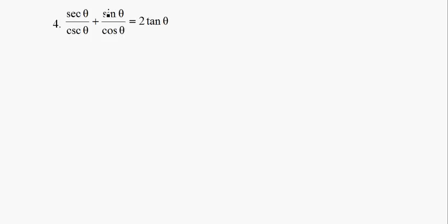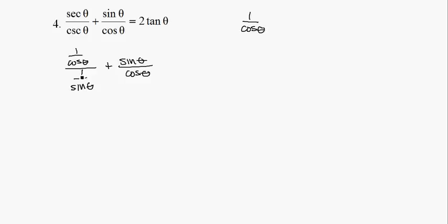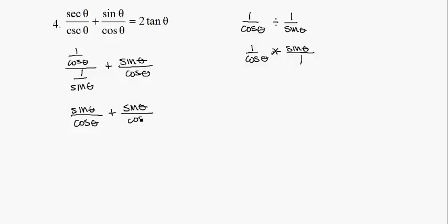Okay, so this is probably the easiest one of all of them. I'm going to change the left-hand side to sines and cosines — really it's just this one term. So that's (1 over cosine theta) all over (1 over sine theta), plus sine theta over cosine theta. Now, (1 over cosine theta) divided by (1 over sine theta) is the same as (1 over cosine theta) times (sine theta over 1). So this equals sine theta over cosine theta plus sine theta over cosine theta, which is 2 sine theta over cosine theta, which is 2 tan theta.